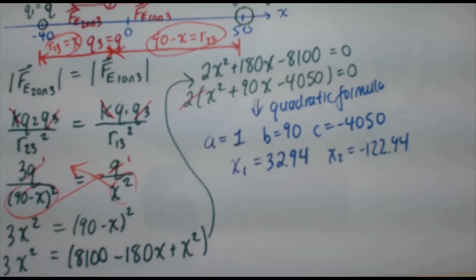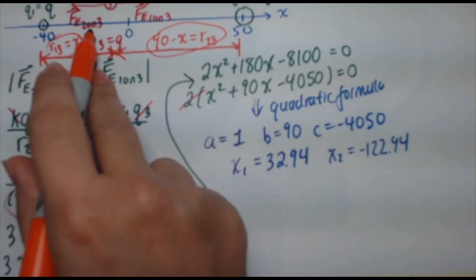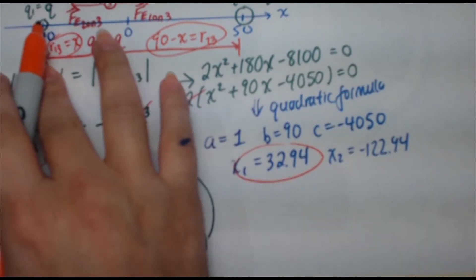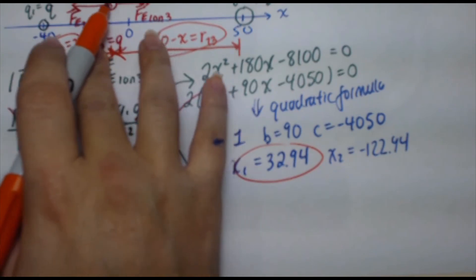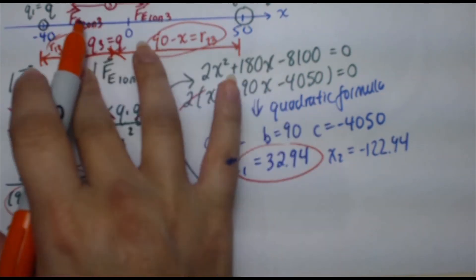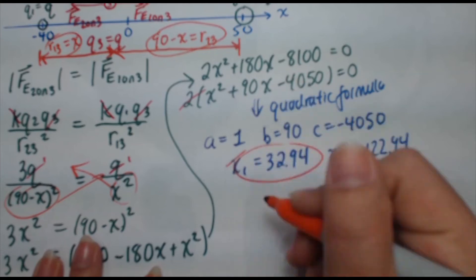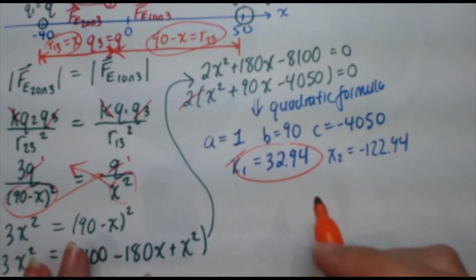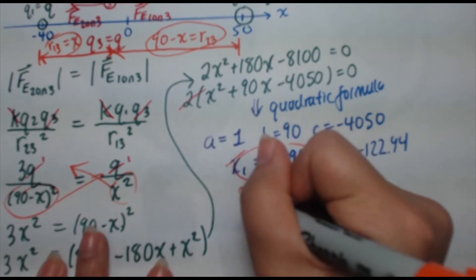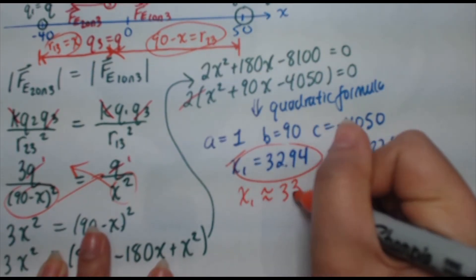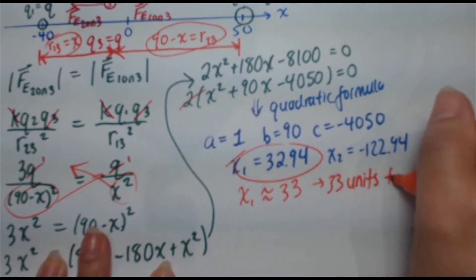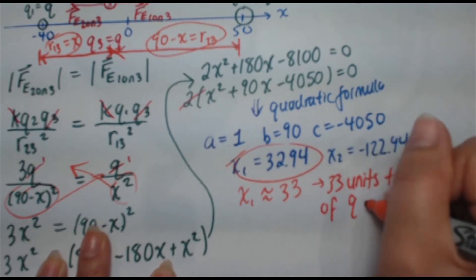Now here's the thing. We know the charge needs to be placed to the right of q1. So only the positive solution makes sense here because this would imply that I have to go to the left and I already determined that the position has to be in between the two, closer to q1. So this solution makes sense. Now we get x1 is 32.94. What I'm going to do is round that to about x1 is about 33. So this means 33 units to the right